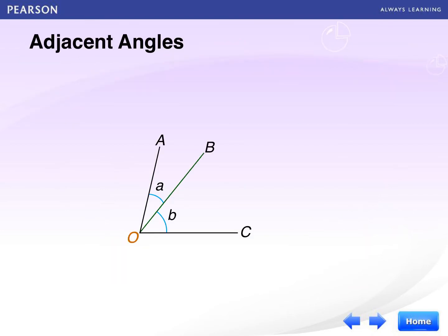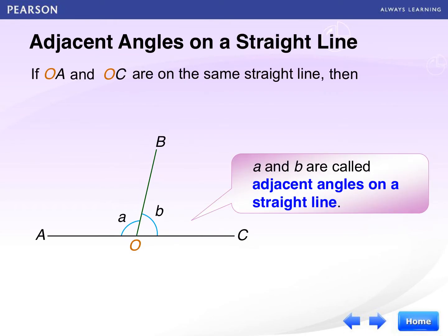Let's think about the arms OA and OC. If OA and OC are on the same straight line, then A and B are called adjacent angles on a straight line.